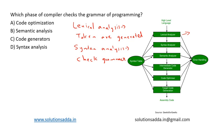Syntax analysis generates an abstract syntax tree. Now the third phase is semantic analysis. The abstract syntax tree is passed on to this phase. In this phase, it checks whether the code is semantically correct — that is, whether it conforms to the language's type system and other semantic rules. So the semantics of the programming language are checked here.